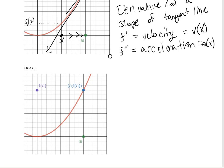Another way to think about the derivative — these will mean the same thing, just slightly different ways of thinking about it. Let's say you have a point that is a distance h away from a. So if a was 5 and h is 2, this new point would be 5 plus 2, so it'd be 7. We're going to call this point a plus h, and its y-coordinate will be f(a plus h).